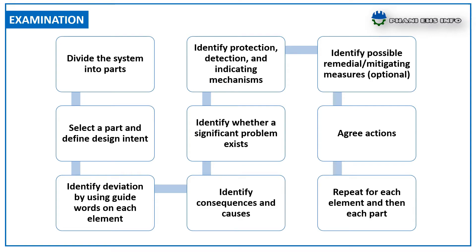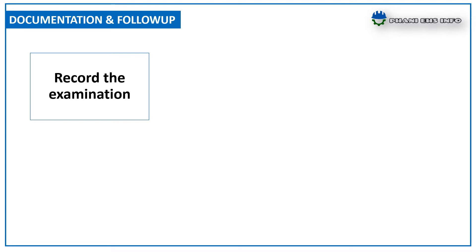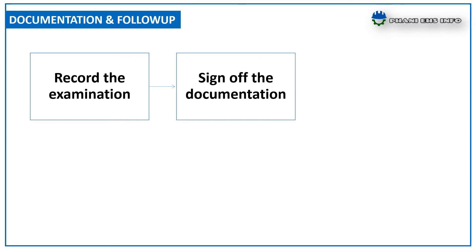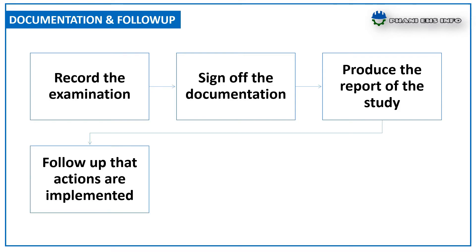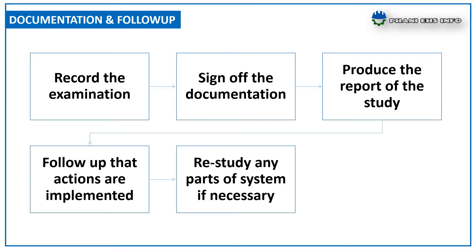Additional examination steps include: identify protection, detection, and indicating mechanisms; identify possible remedial or mitigating measures; agree on actions; and repeat for each element and each part. The documentation and follow-up phase includes: record the examination, sign off documentation, produce a report of the study, follow up that actions are implemented, restudy any part of the system if necessary, and produce the final output report.